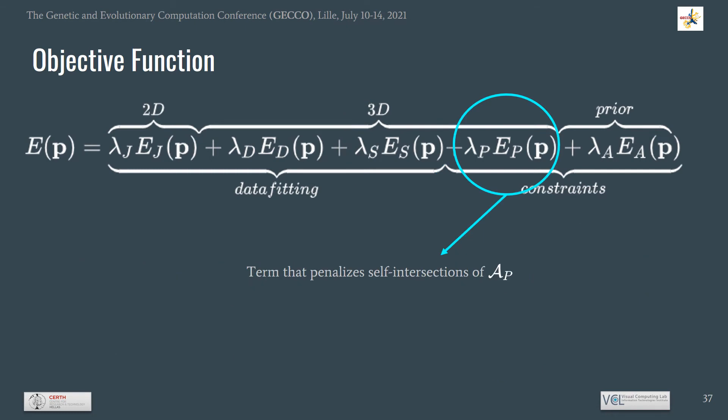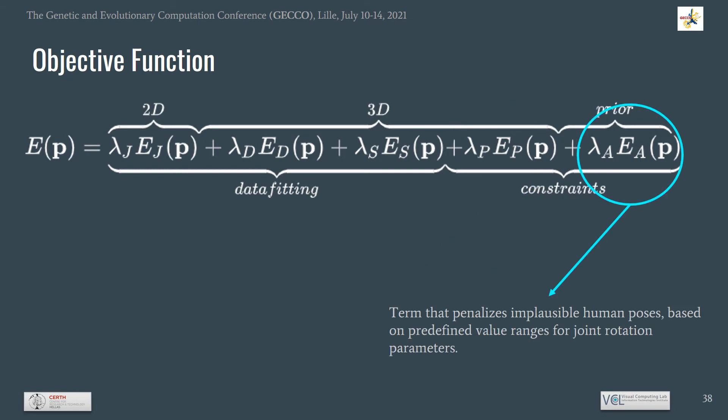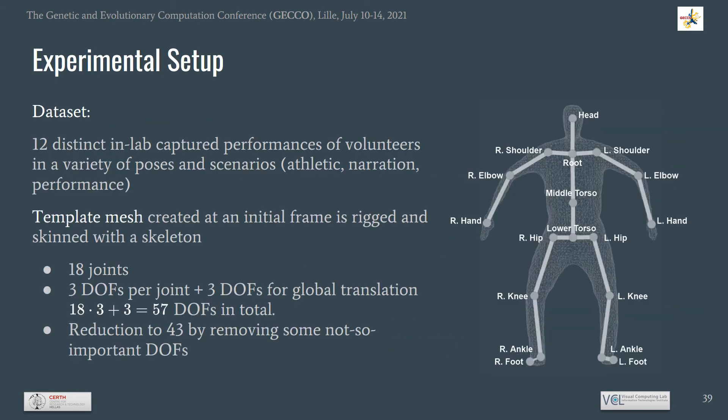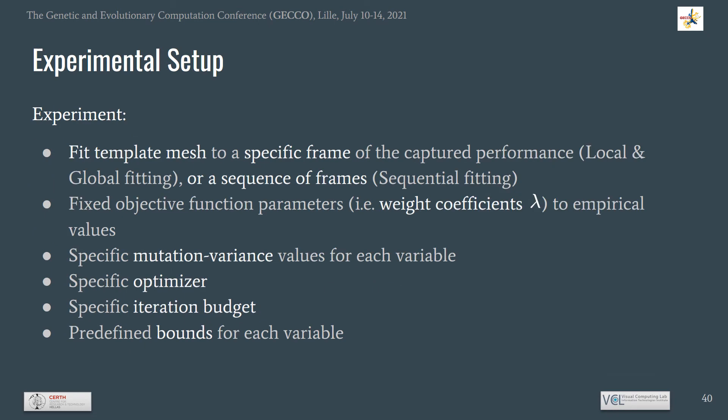Finally, we have two additional error terms: one that penalizes poses resulting in self-intersections of the animatable template, and one that penalizes implausible human poses. Overall, our animatable template is parameterized by 43 degrees of freedom. At each experiment in local and global fitting, we fit the template mesh to a specific frame of the captured performance, while in sequence fitting we fit the template to a sequence of frames. The objective function coefficients lambda are fixed at specific empirical values, with defined mutation variants and bounds for each variable, as well as the optimizer and its iteration budget.